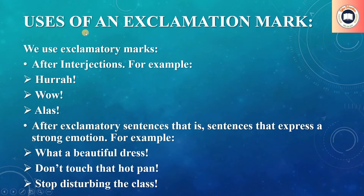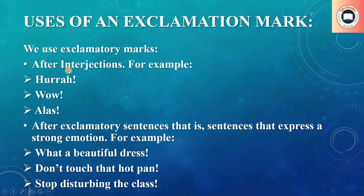Now that we know what an exclamation mark is, let's understand its different uses. We use exclamation marks after interjections — words like 'hooray,' 'wow,' and 'alas.' Whenever you use these kinds of words in sentences, you always place an exclamation mark after them. We also use exclamation marks after exclamatory sentences that express strong emotion.